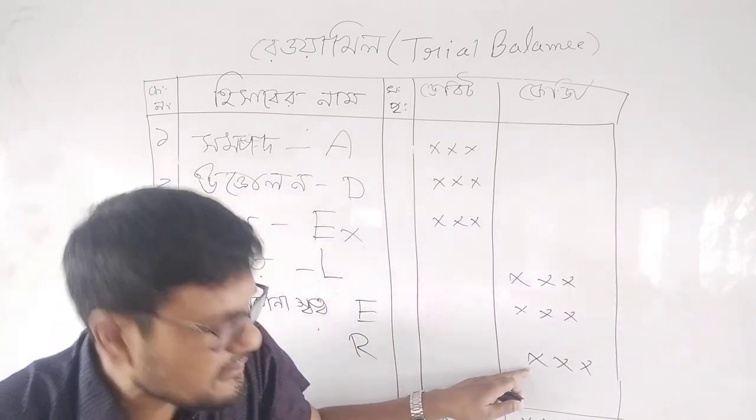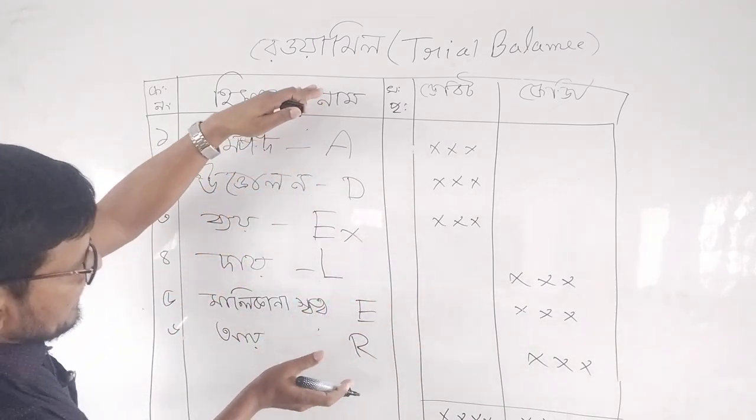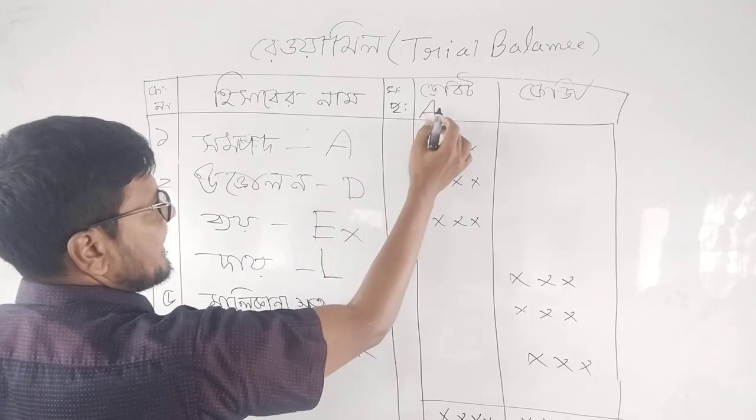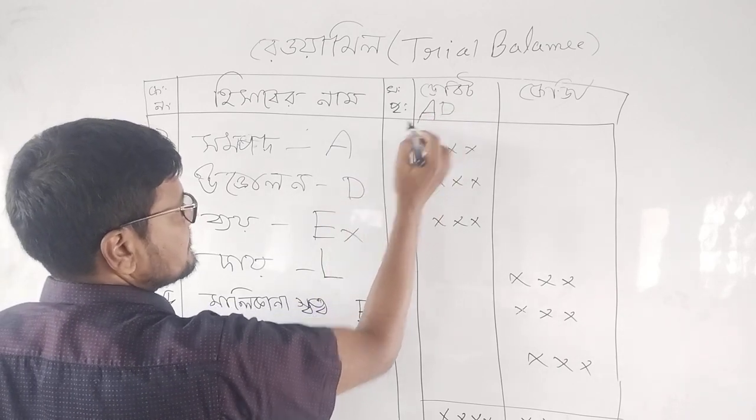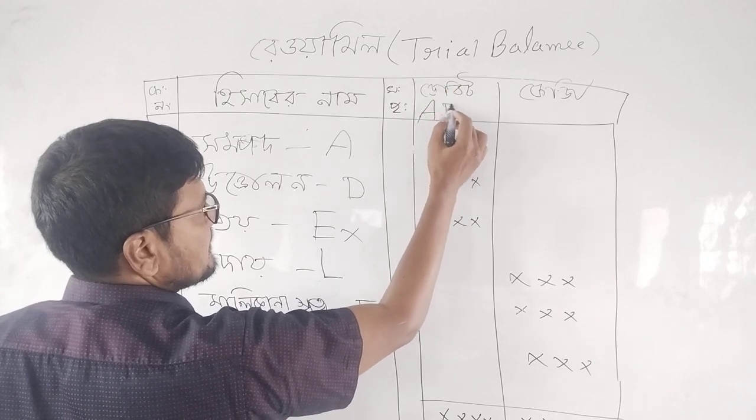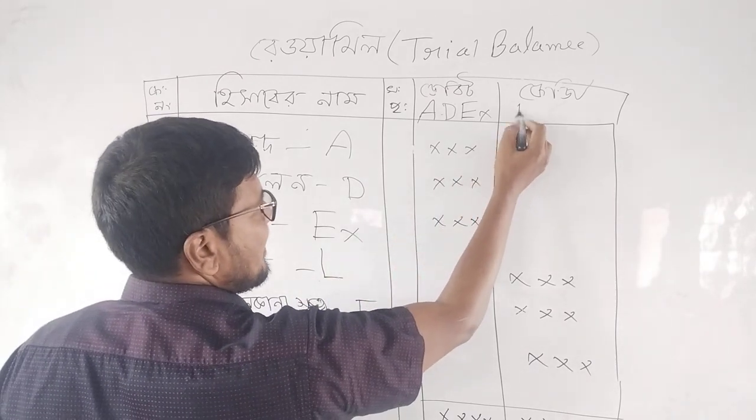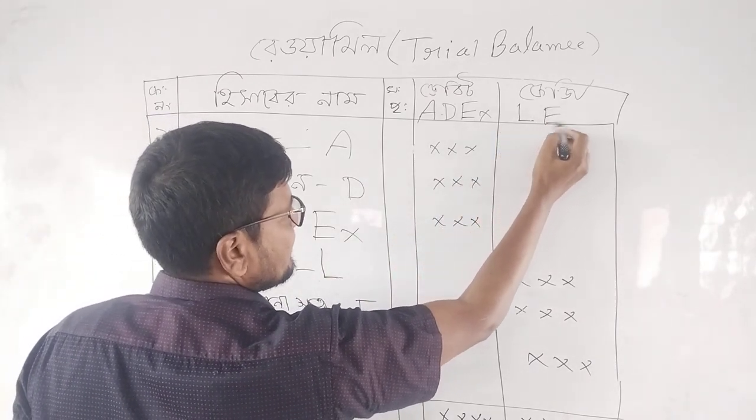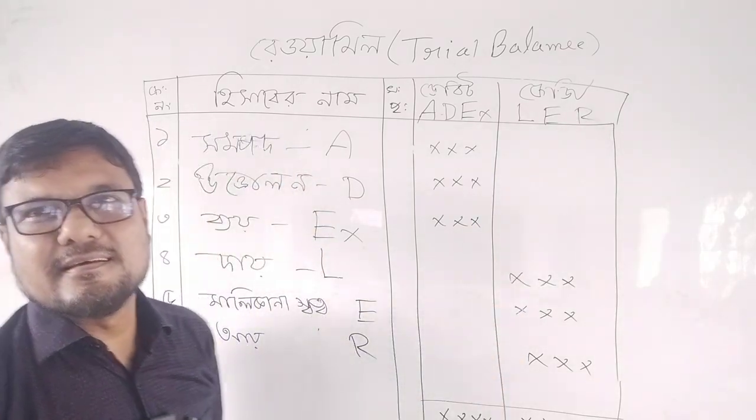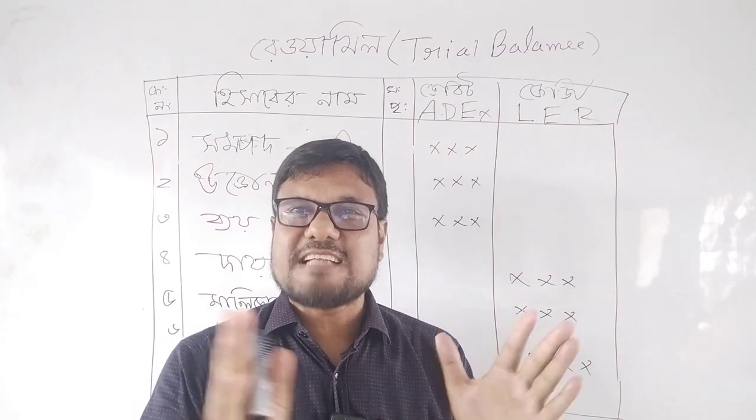So if we arrange these topics as A, D, E, X, D, E, X, and lastly L, E, R, that is the EDEXLER law. This is an important topic and the basis for preparing a trial balance of accounting.